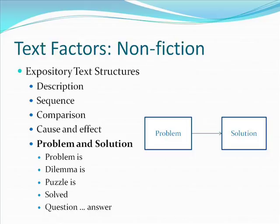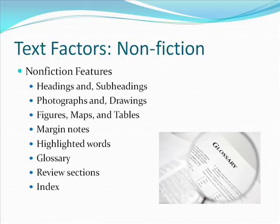Non-fiction books have unique text features that stories and books of poetry normally do not have, such as margin notes and glossaries. The purpose of these features is to make text easier to read and to facilitate students' comprehension. Non-fiction texts often include headings and subheadings to direct readers' attention to the main idea; photos and drawings to illustrate big ideas; figures, maps, and tables to provide detailed information visually; margin notes with supplemental information; highlighted vocabulary words; a glossary; review sections or charts; and an index. It is important that students understand these features so they can use them to improve their comprehension.